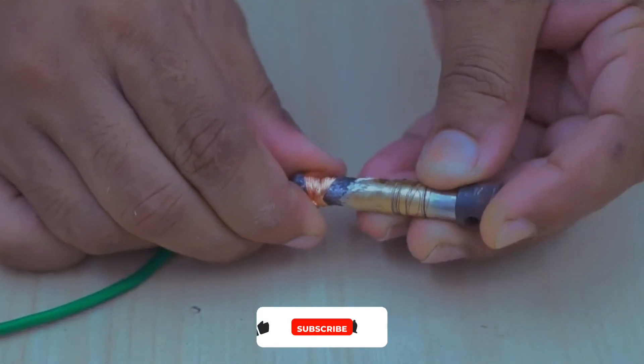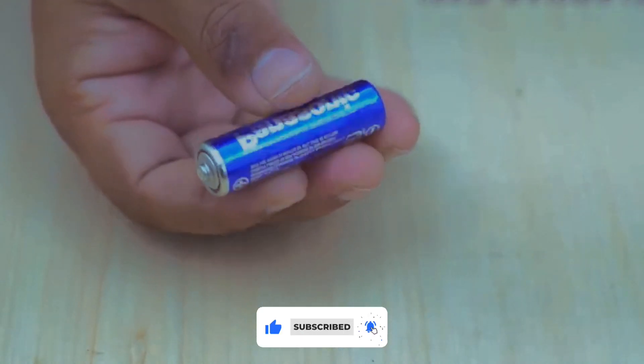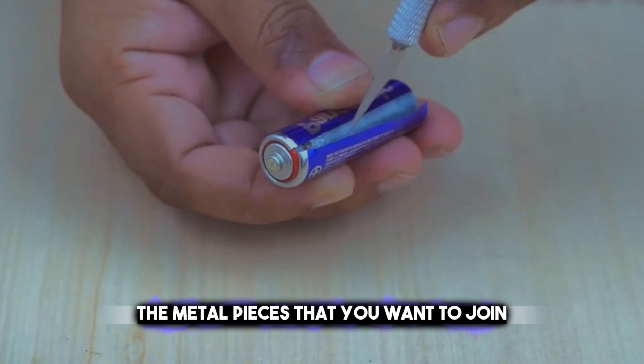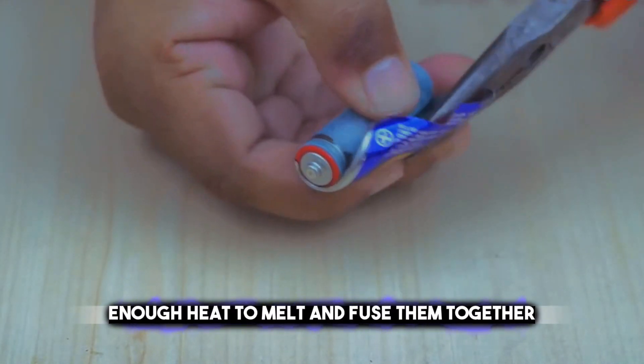The copper rods are connected to the battery terminals with wires and a switch is added to control the current flow. To weld, you just need to touch the copper rods to the metal pieces that you want to join and the current will create enough heat to melt and fuse them together.